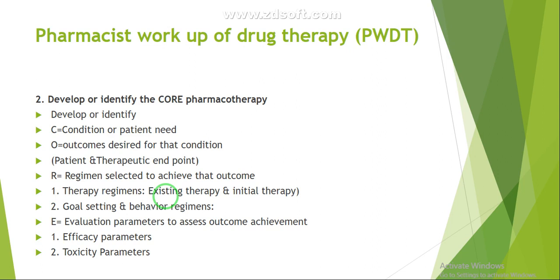The second type of outcome is the therapeutic endpoint, which is based on disease-oriented evidences. The therapeutic endpoint is the expected therapeutic effect of the drug to achieve the desired outcome. For example, near-normal glycemic control and normalization of blood pressure are necessary to significantly reduce the risk of end-stage renal disease. These are the disease-oriented evidences and therapeutic endpoints in that example.